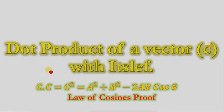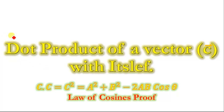The modification of vectors can be carried out with either scalar product or vector product. In vector product, when we multiply two vectors, it results in a vector quantity. But in scalar product, which is also known as the dot product, when we multiply two vectors, it results in a scalar quantity.